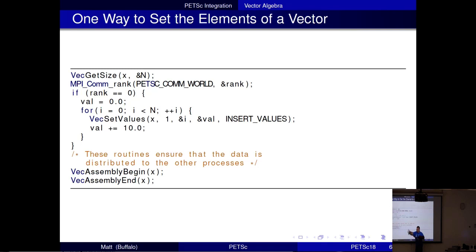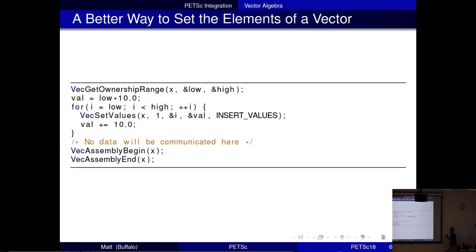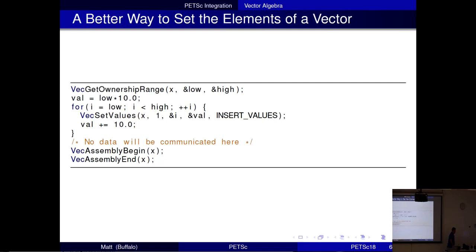The way to improve it: if I know I'm setting everyone to a multiple of 10 — just their index times 10 — I could ask: tell me what indices I own. What is my ownership range? And only loop over those and set the value. Then when I call AssemblyBegin and End, nothing will be communicated. This is actually not too expensive now — Jed put in a nice scalable consensus algorithm from Torsten Hoefler and colleagues. So you can pretty much do this and not worry.